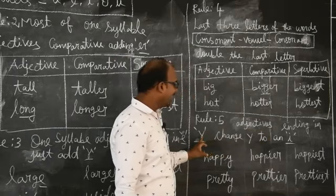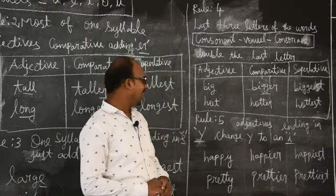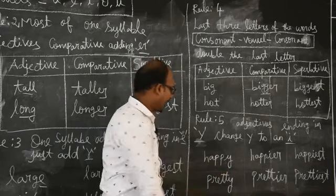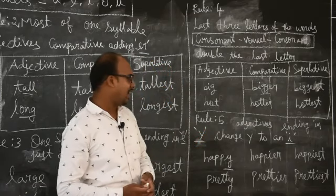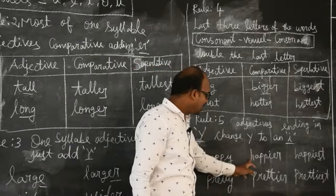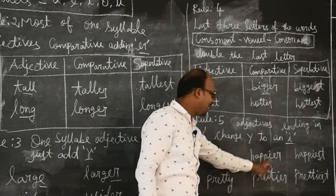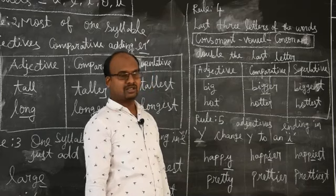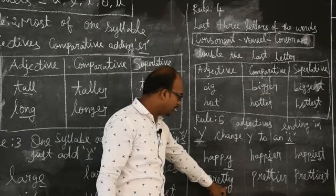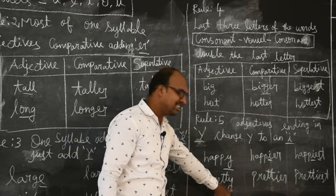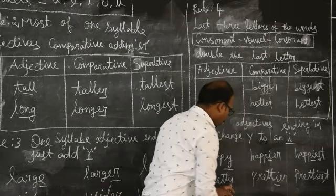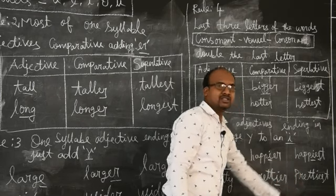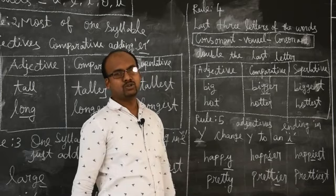The fifth rule: adjectives ending in Y — change Y to I. If the adjective ends in Y, for example 'happy,' you change Y into I. In comparative: H-A-P-P — Y changes to I — 'happier.' In superlative: 'happiest.' Next word: 'pretty' — adjective ends in Y. Change Y to I. Comparative: 'prettier.' Superlative: 'prettiest.'